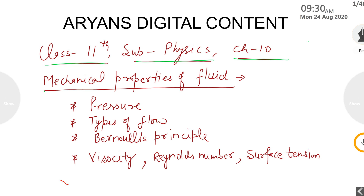The name of the chapter is Mechanical Properties of Fluid. This is a very important chapter and it is a little bit long, carrying almost 7 to 8 marks in your final exams.